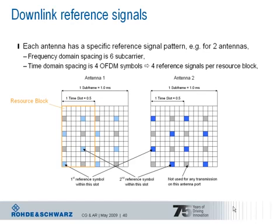In the time domain, the spacing is four OFDM symbols, as shown in the diagram. The resource block, which is twelve subcarriers and seven OFDM symbols when normal cyclic prefix is used — or six OFDM symbols for extended cyclic prefix — contains four reference symbols at certain resource elements.